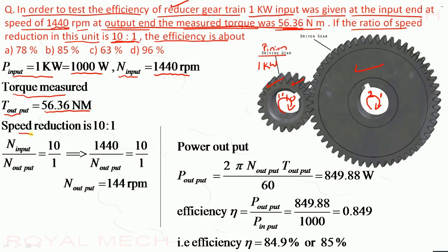So speed reduction is 10 is to 1, so that is N input upon N output is equal to 10 upon 1. Because input it is 10, output it is 1. So we have already input speed, so we can find the output speed. So input speed is 1440, this is 10 upon 1, so we get output speed.